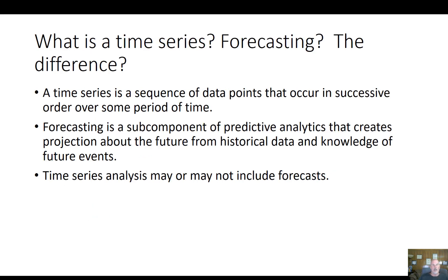So, what is a time series? A time series is a sequence of data points that occur in successive order over some period of time. Normally we're talking about units of time that are equal — so if you look at the x-axis, those units are going to be equal, not logarithmic or something like that.